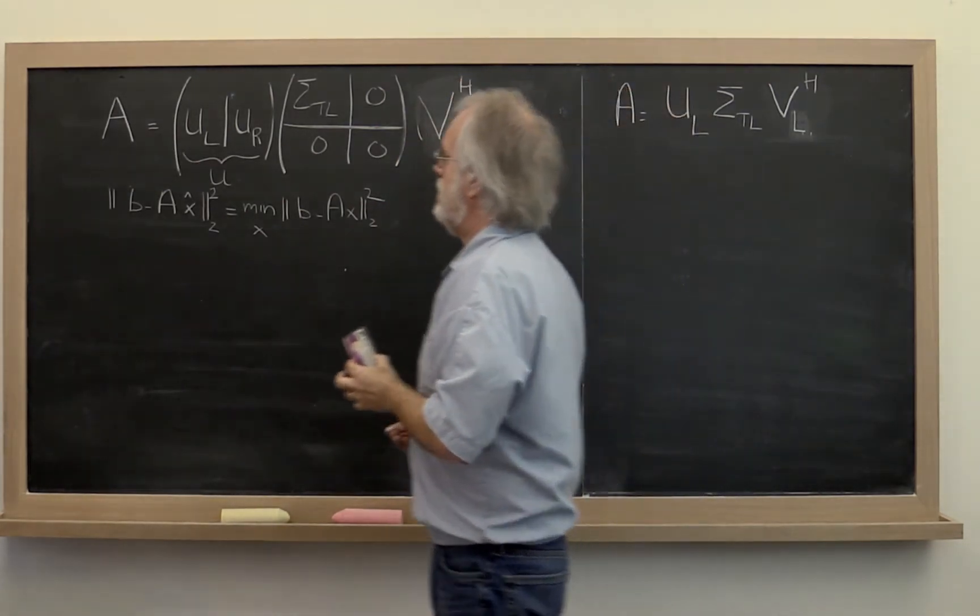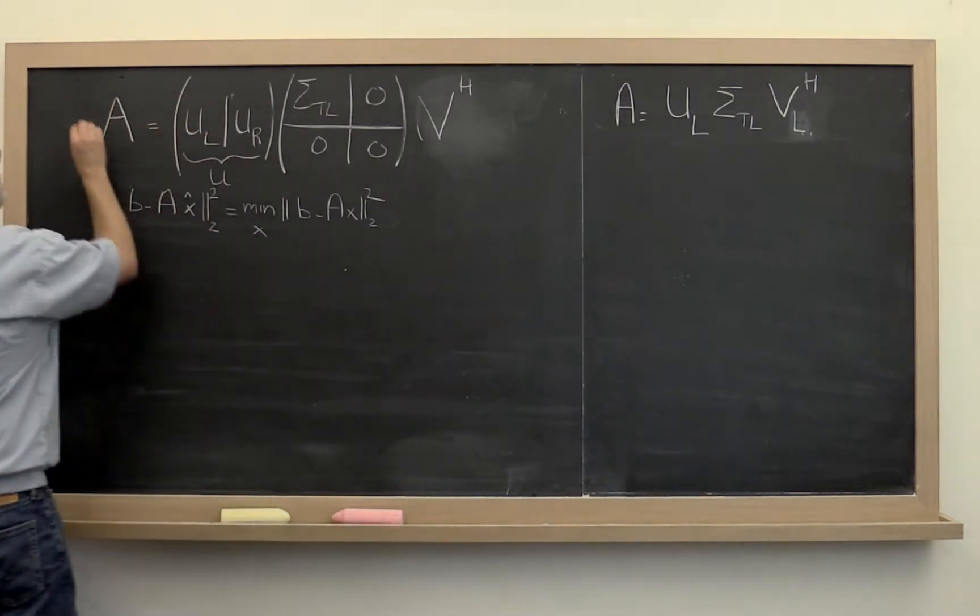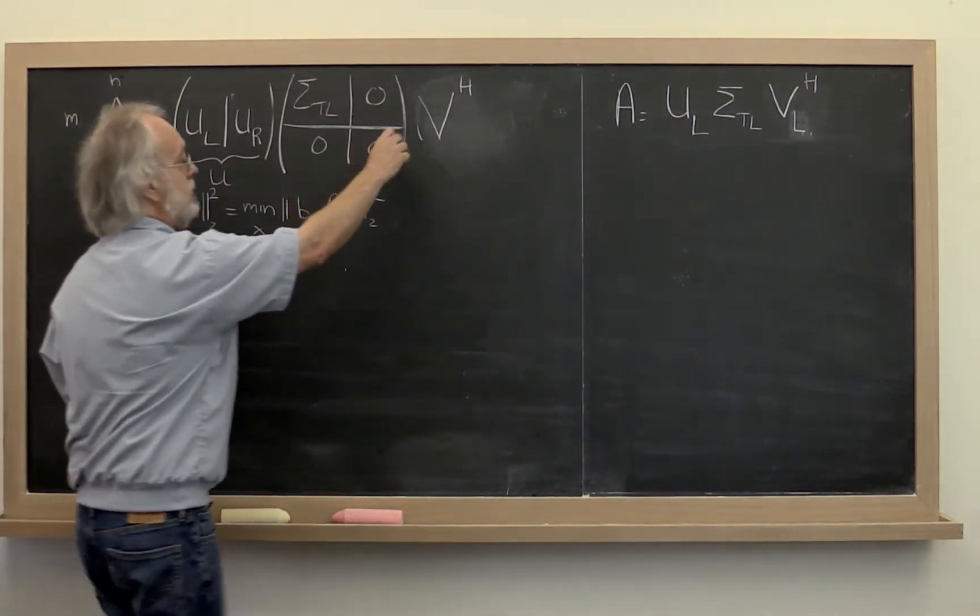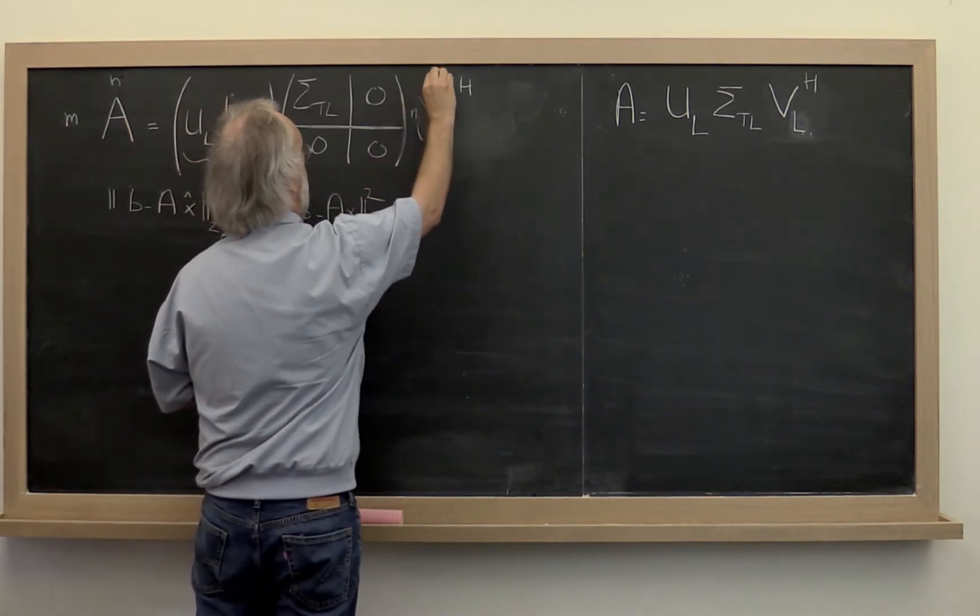So let's think about this in terms of the sizes of the various matrices. This is M by N. This is now N by N.